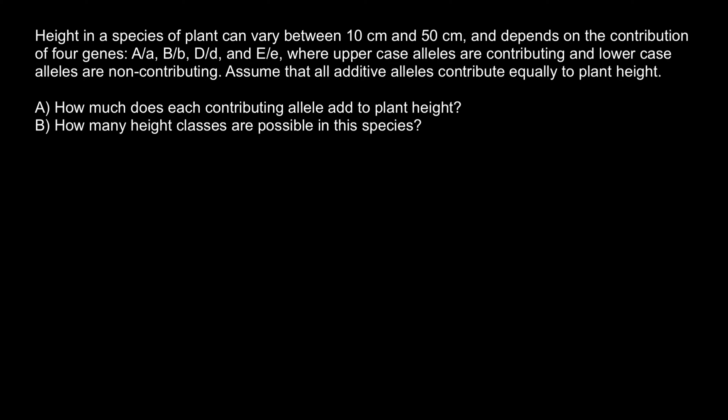Hello and welcome to Nikolai's genetics lessons. Today's problem: height in a species of plant can vary between 10 centimeters and 50 centimeters, and depends on the contribution of four genes A, B, D and E, where uppercase alleles are contributing and lowercase alleles are non-contributing. Assume that all additive alleles contribute equally to plant height. Two questions: A) How much does each contributing allele add to the plant height? And B) How many height classes are possible in this species?